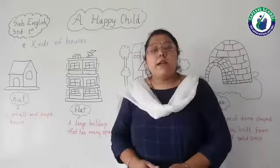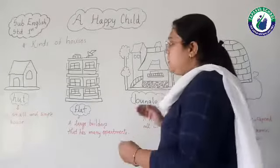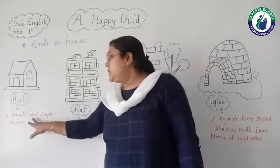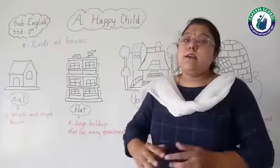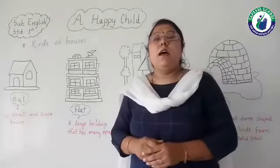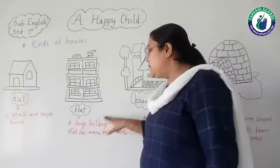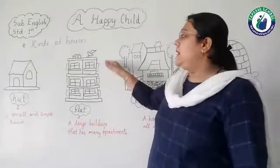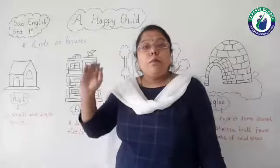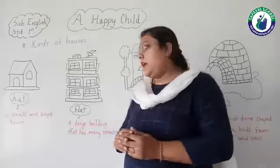Let us learn about kinds of houses. We have seen so many types of houses. First is hut — H-U-T. A hut is a small and simple house. Generally you can see this type of house in the villages. Next: flat — F-L-A-T. Flat means a large building that has many apartments. You can see here — first floor, second floor, third floor — so many floors are there. Some of us are living in flats.